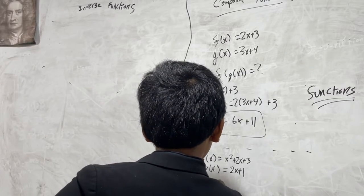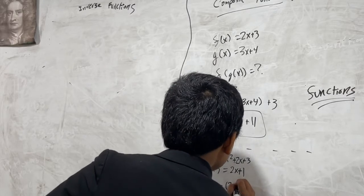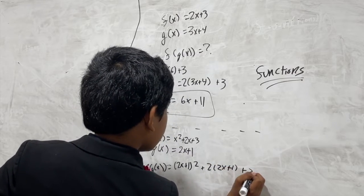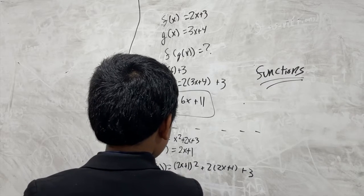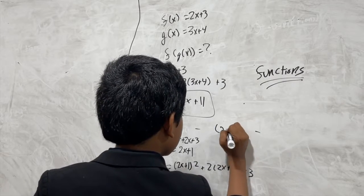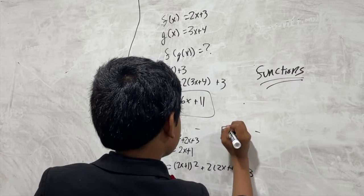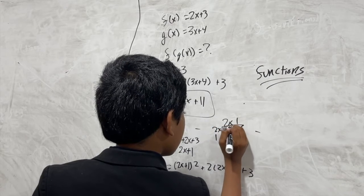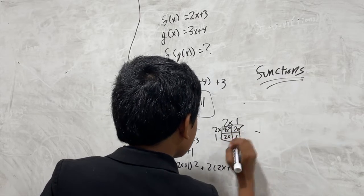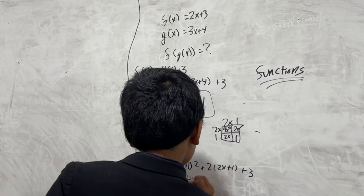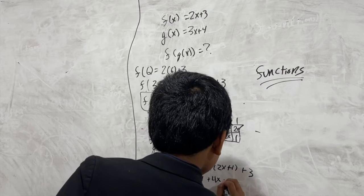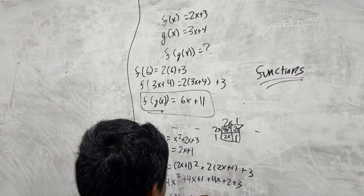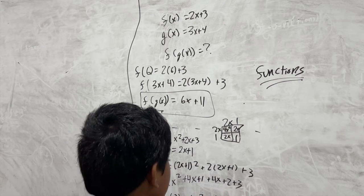So f(g(x)) would be (2x+1)² + 2(2x+1) + 3. You have to multiply 2x+1 by itself. Using that method, this gives us 4x² + 4x + 1, plus 4x + 2, plus 3. So f(g(x)) in this situation equals 4x² + 8x + 6.